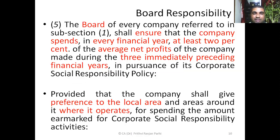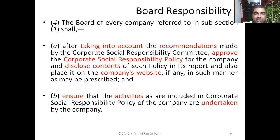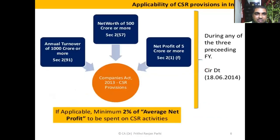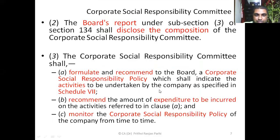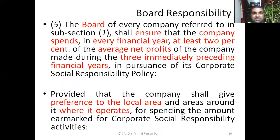How much money has to be spent? Minimum 2%. We have to see the preceding three years' financial statements. The board of every company referred to in Section 135(1) shall ensure that the company spends in every financial year at least 2% of the average net profit of the company made during the three immediately preceding financial years. So we calculate the average net profit of those three years and spend at least 2% of that.